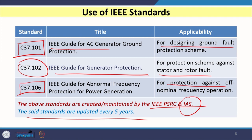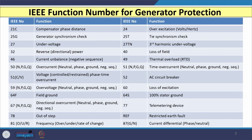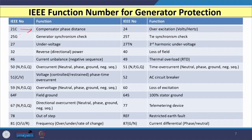Apart from those standards, there is an IEEE standard giving particular function numbers in generator protection. Function 21C is for compensator phase distance, normally used to achieve backup protection. 25G is for synchronism check. 27 is for under-voltage. 32 is for reversal of power — reverse power protection, which is directional in nature. 46 is for negative sequence. 50 is for over-current, which can be in the neutral circuit, phase circuit, ground circuit, or in the form of negative sequence.